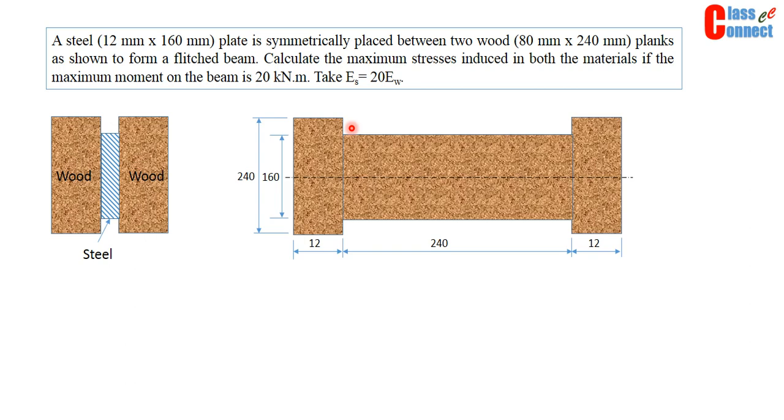So this would be the equivalent section because this 12 mm is now multiplied by 20 to make new width of wood that is 240 mm. So this is the complete wood section, equivalent section in wood.